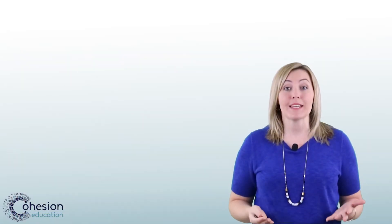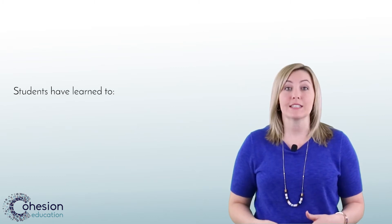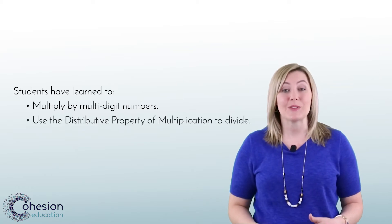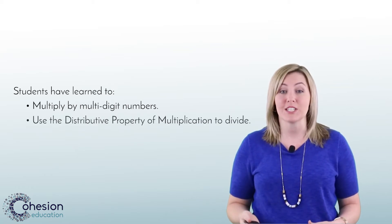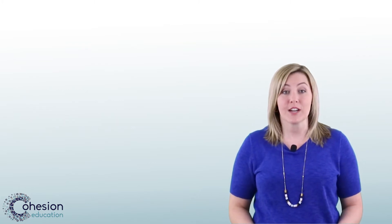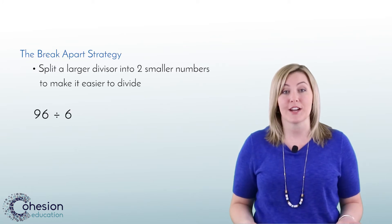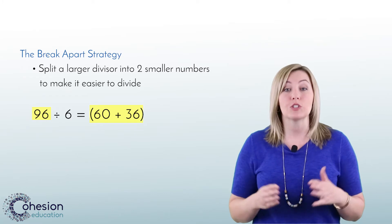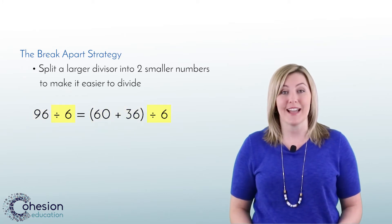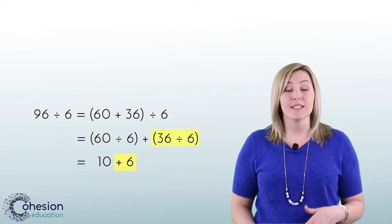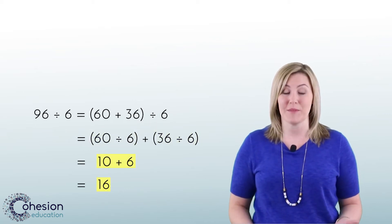In today's lesson we will encounter multi-step word problems. Before starting this skill, students have successfully learned to multiply by multi-digit numbers and use the distributive property of multiplication to solve division problems. In this lesson we will learn a new division strategy similar to the distributive property called the break-apart strategy. This strategy involves splitting a larger number into two smaller numbers, making it easier to divide. For a full explanation of the distributive property, revisit the video 'Use Multiplication to Solve Division Problems.'